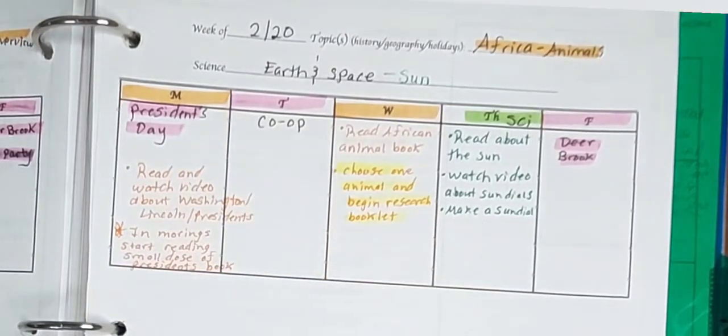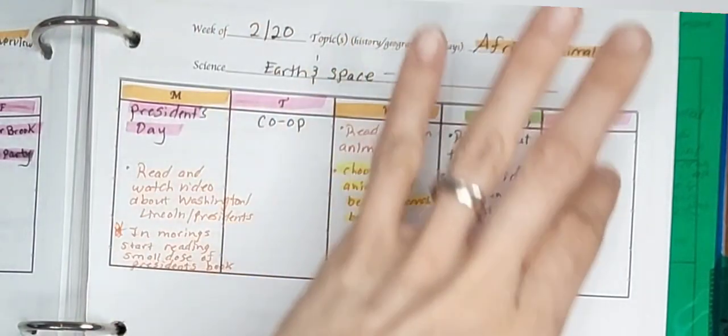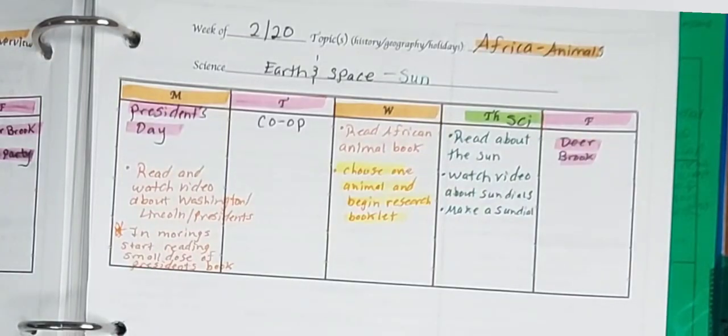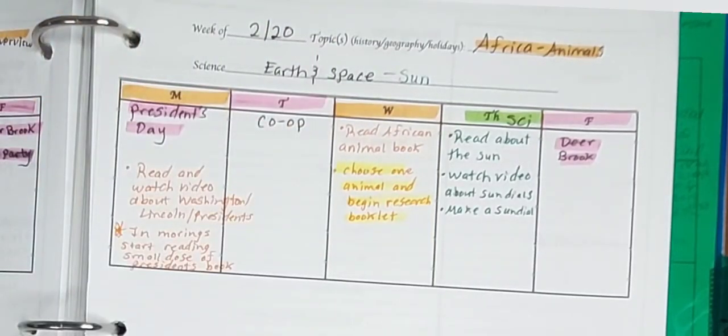But usually like on our science days, I don't do writing for science. Whatever writing theme we started on Monday, we would just do again on Thursday and Friday. Which by the way, on the days that we have on Fridays when we have a homeschool group, it's not an all day thing. So we still aim to do our core subjects. And then our days we do Tuesdays, it's an all day co-op. So we really have more of a four day week.